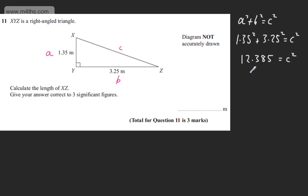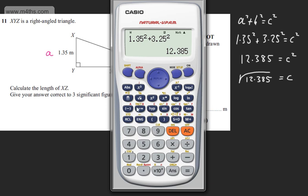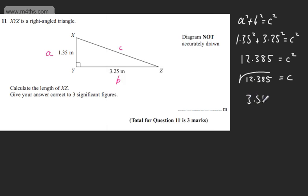So we can say that C is going to be the square root of this. C will be the positive square root of 12.385, and all we need to do is get that answer. If I just square root my answer, that's going to give me 3.519.